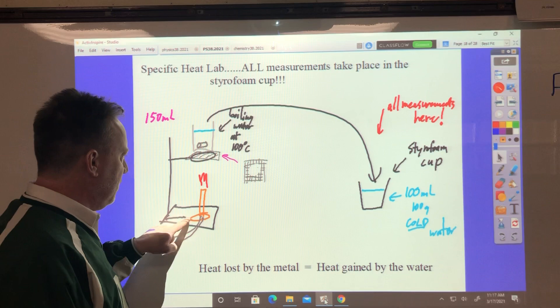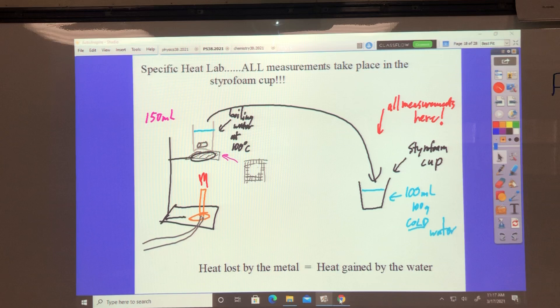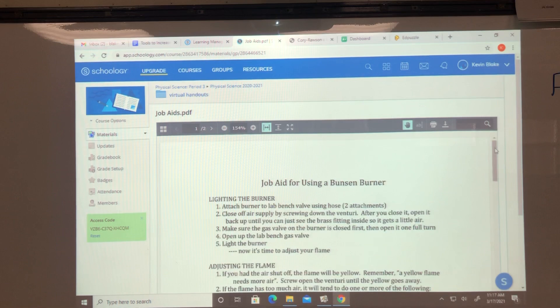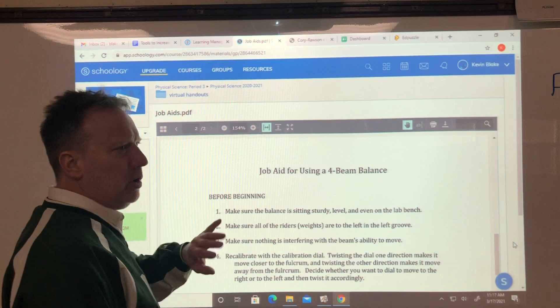And in this lab we have to run a burner and we have to run a balance to measure this. So you should probably, if you don't already know stone cold how to do it, find your, in the Schoology, your virtual handouts and the job aids and in there it tells you how to use a Bunsen burner which we use about the second week of school and how to use the four beam balance because we're gonna be using both of those.